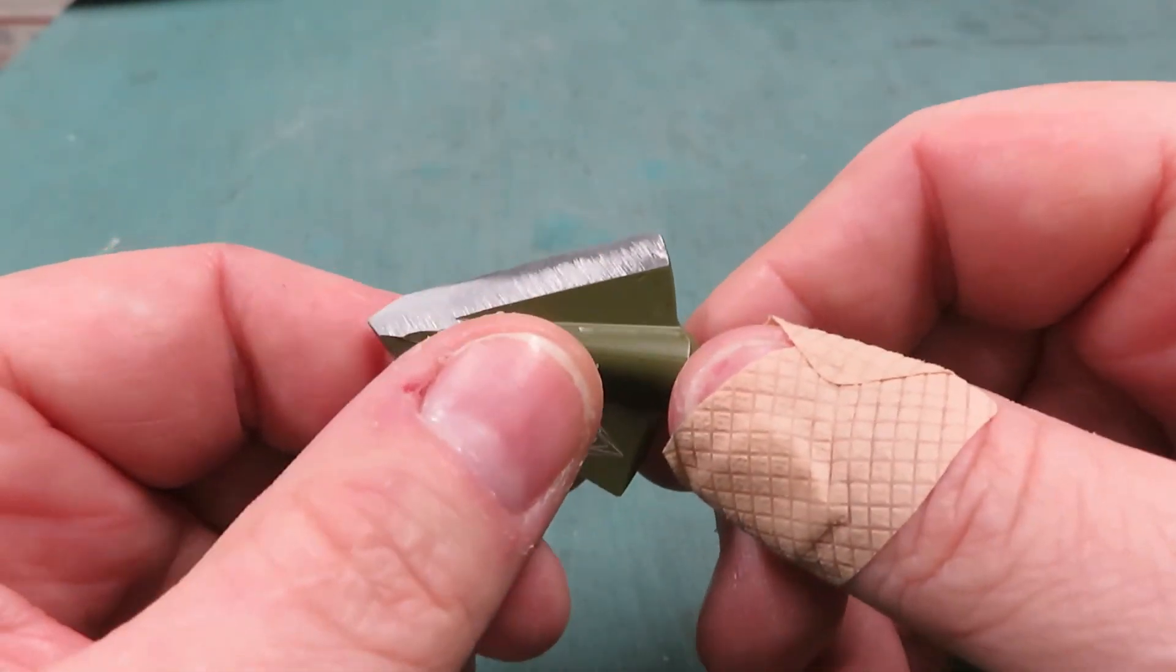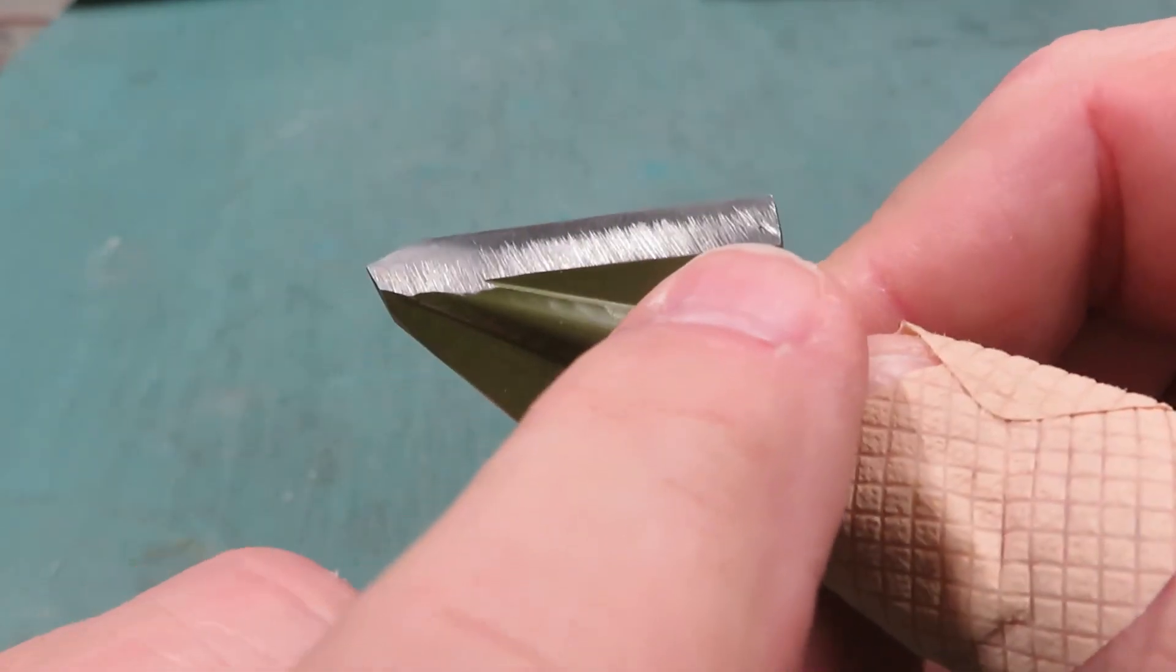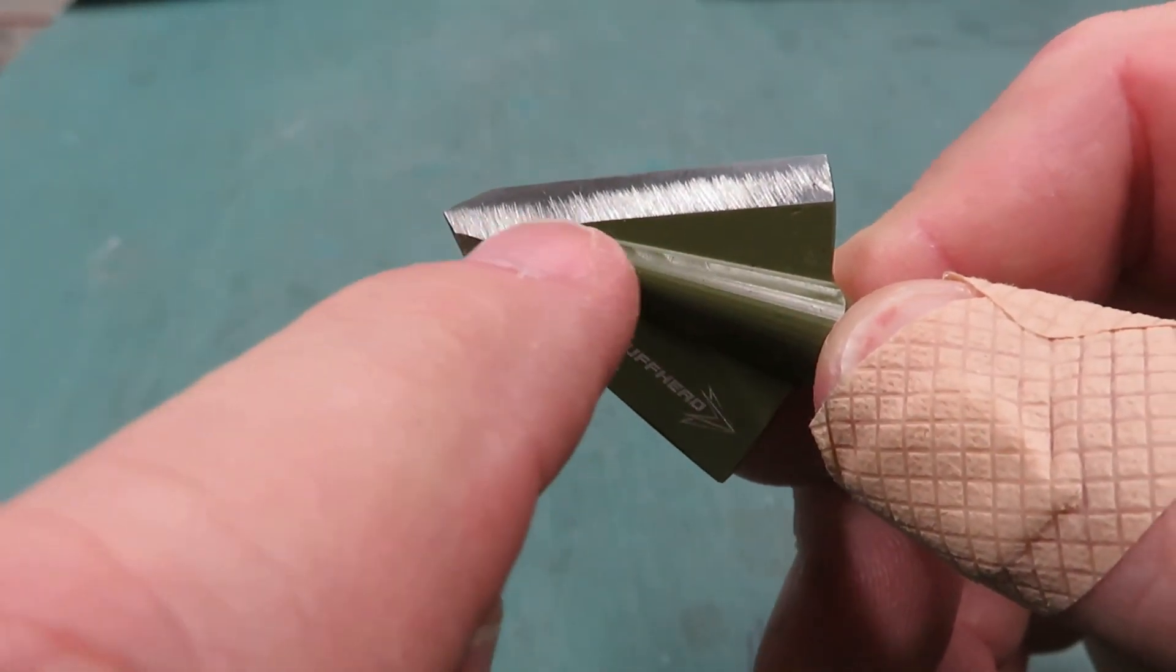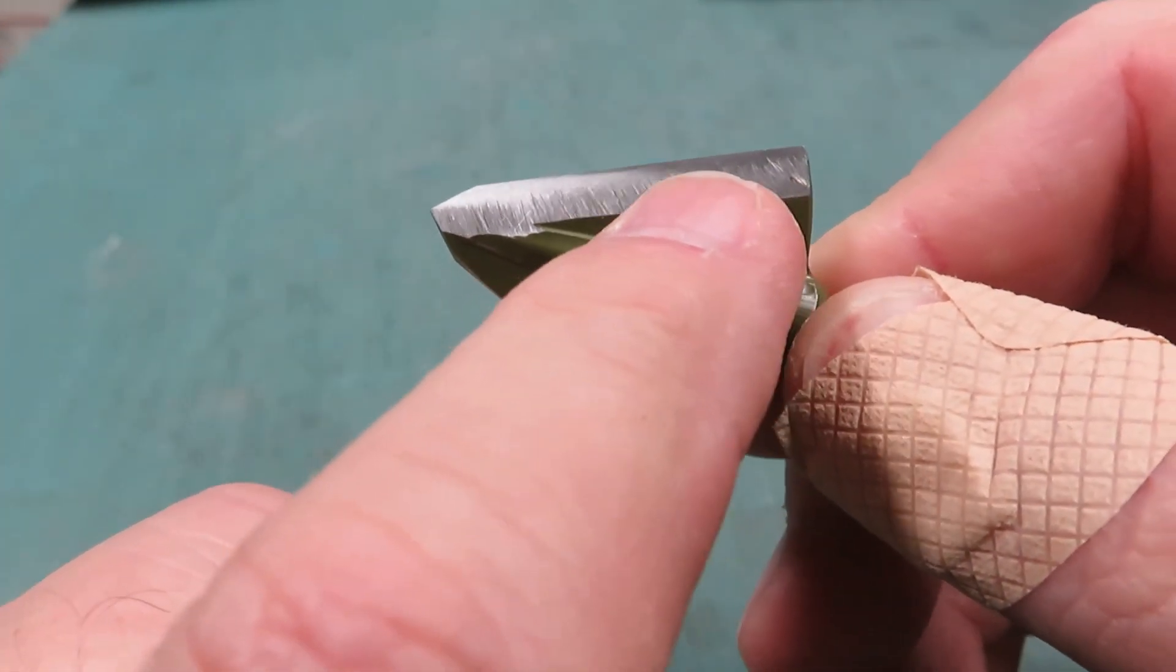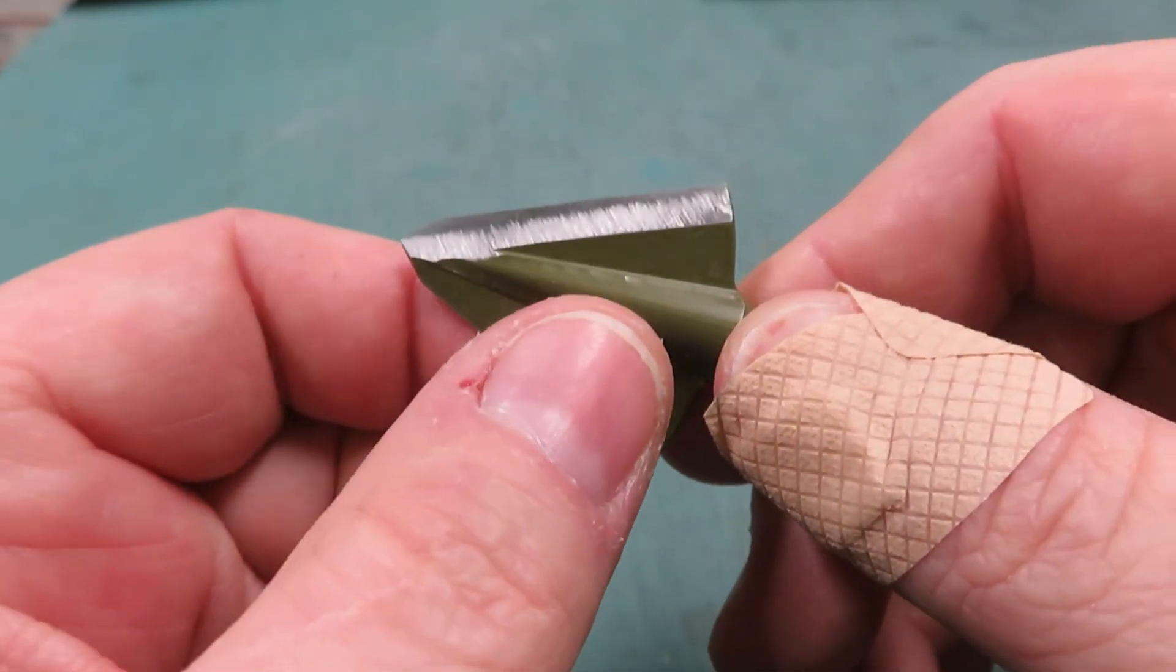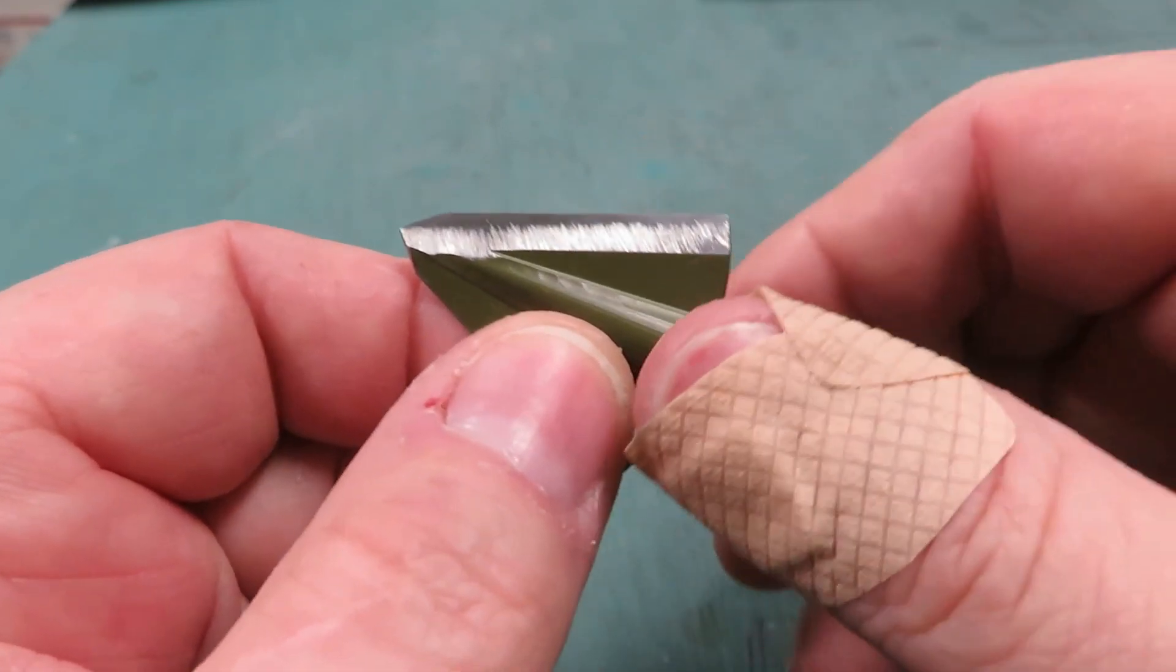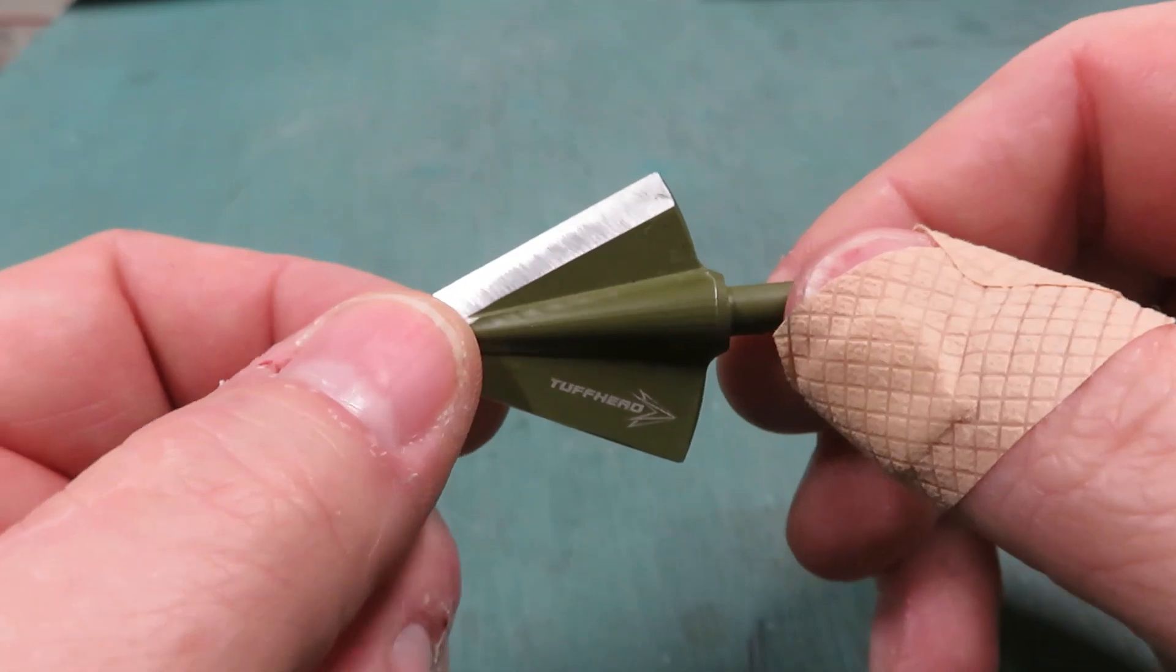Right out of the box I can tell you that this is going to be a sharp head. I can see they do the material removal to get it down to 20 degrees and then they do a secondary sharpening. Their website says they sharpen each one by hand and I can tell you this is a sharp edge. This feels really sharp.